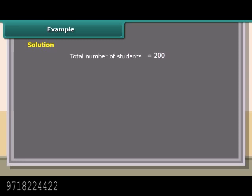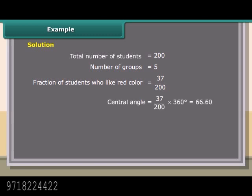Solution: Total number of students = 200, Number of groups = 5. Fraction of students who like red color = 37/200. Central angle = (37/200) × 360 degrees = 66.60 degrees.